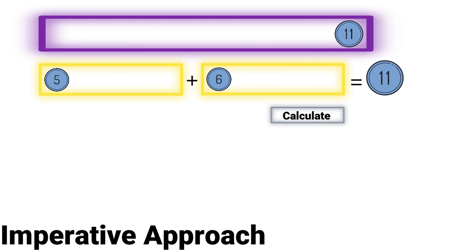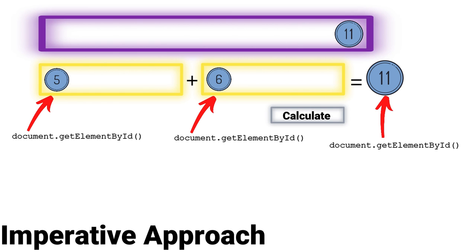So with the imperative approach that is with JavaScript, it goes something like this. You take reference of this text box using document.getElementById. Then you take reference of this text box and also reference of this label.